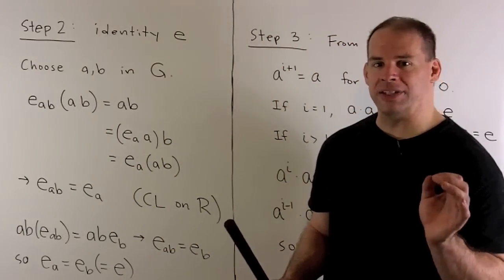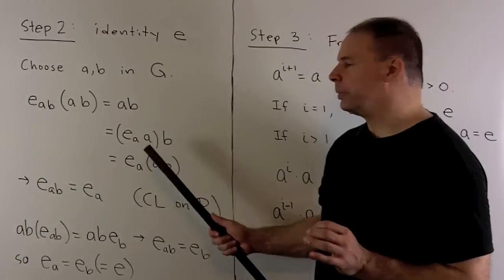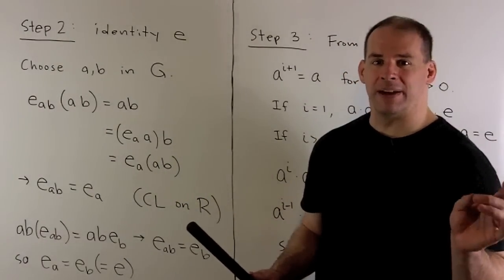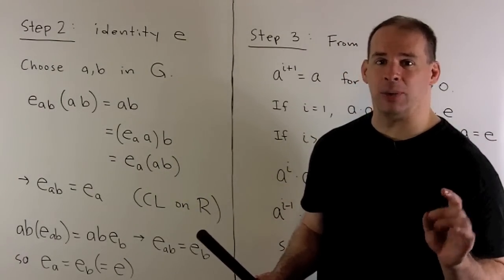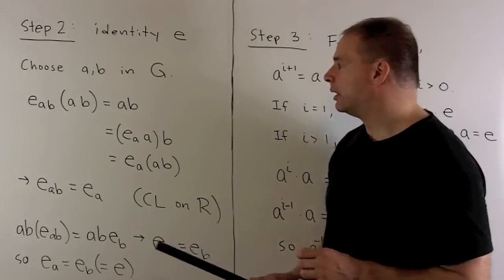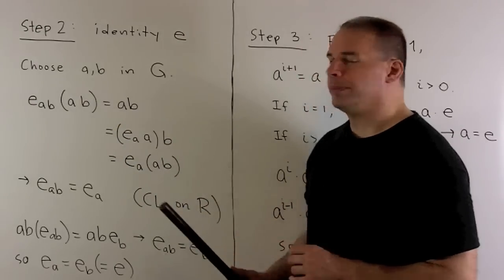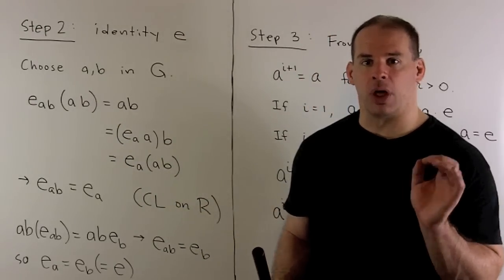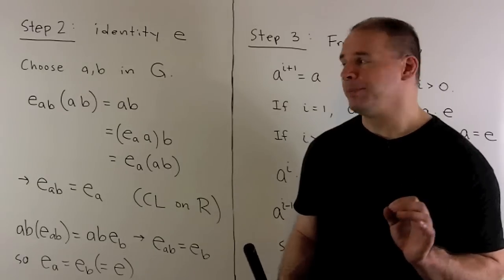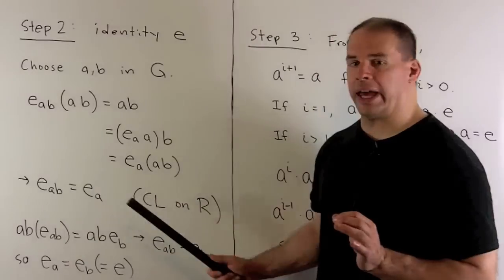We multiply on the left by E sub A. Well, I can group E sub A with A. By definition, we get back A and then again we get A times B. So, these two items are equal. We use the cancellation law on the right to get rid of AB. So, we get E sub AB equals E sub A.